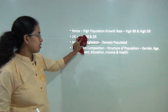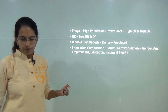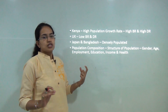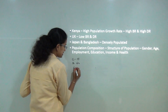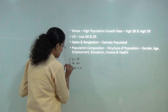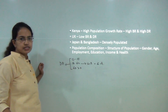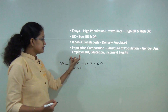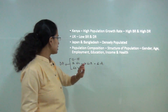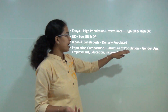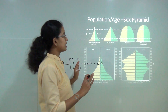What does population composition include? It includes the structure of population — the age groups: 0 to 15, 16 to 64, and 65 and above. The 0–15 and 65+ groups are the dependent population, while 16–64 is the working or economically active population who generate revenue. Population composition also includes gender, employment, level of education, level of income, and health facilities. Based on these, you have the population pyramid, also called the age-sex pyramid.